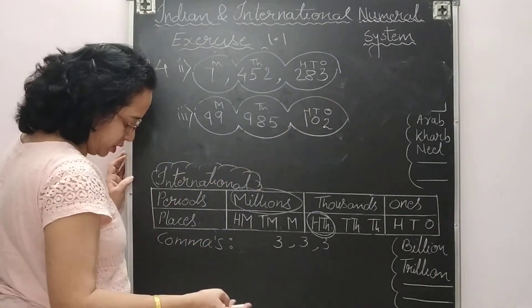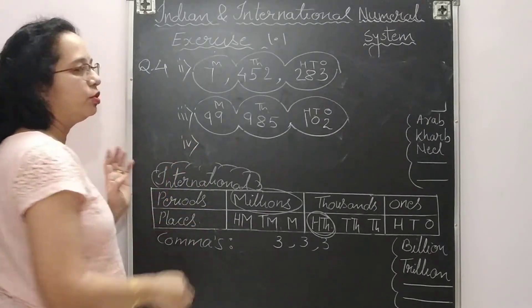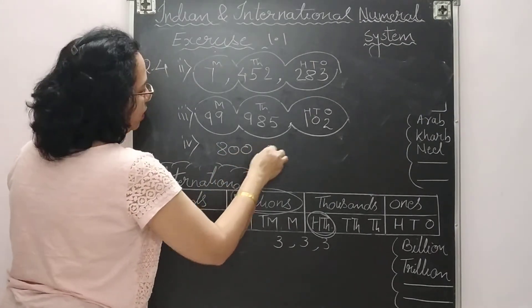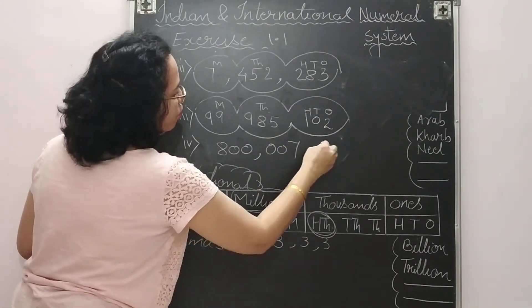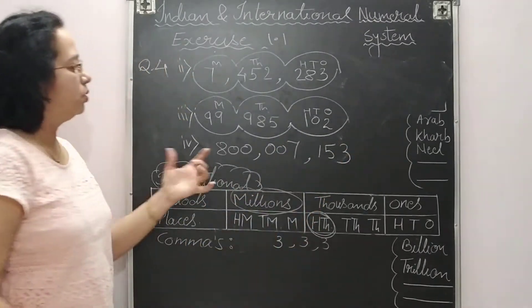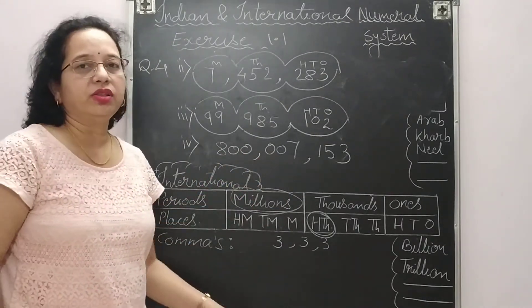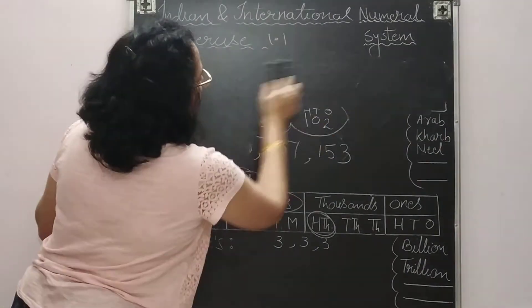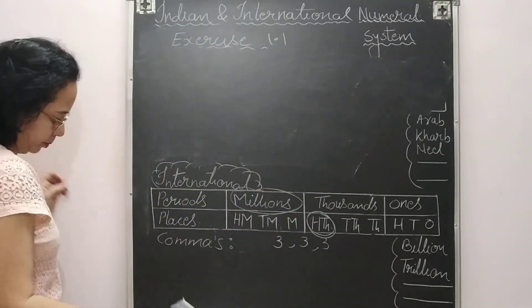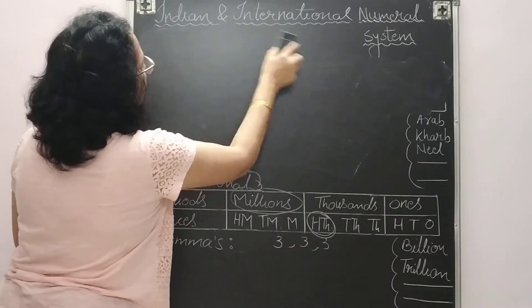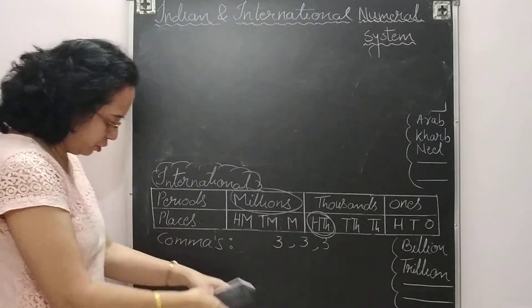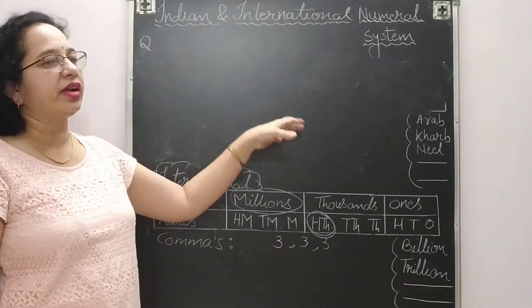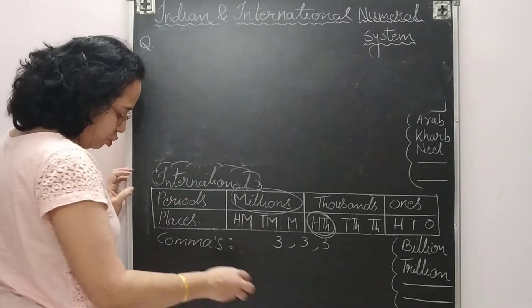The fourth one from the international examples and the extra homework number are both your homework — write those answers in the comment section so it will be clear to me that you have understood the concept. Now the next question is: write in numeral. Previously we were given numerals and writing in words; now it is the reverse — given in words, write in numeral.